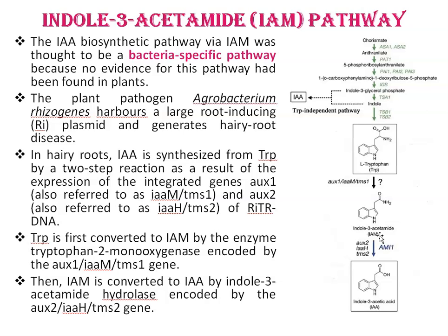The plant pathogen Agrobacterium rhizogenes harbors a large root-inducing (RI) plasmid and generates hairy root disease in plants. In hairy roots, IAA is synthesized from tryptophan by a two-step reaction as a result of the expression of integrated genes: AUX1 (also referred to as IAAM or TMS1) and AUX2 (also referred to as IAAH or TMS2) of RI T-DNA.